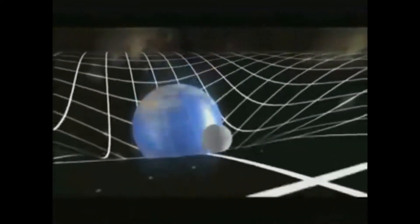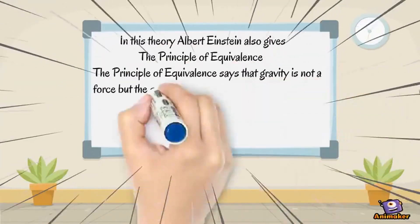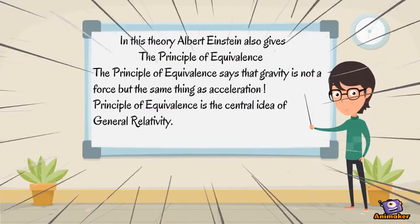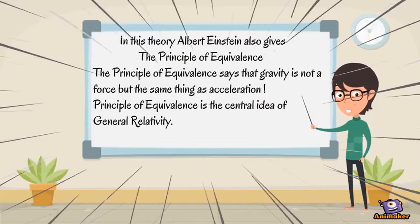In this theory, Albert Einstein also gives the principle of equivalence. The principle of equivalence says that gravity is not a force at all, but the same thing as acceleration. The principle of equivalence is the central idea of general relativity.